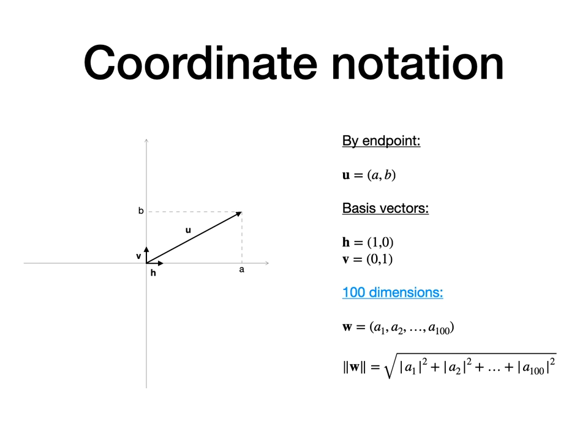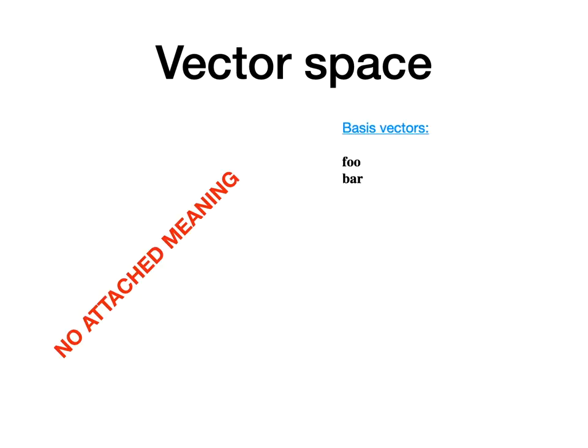But the story of vectors doesn't end here. Mathematicians also realized that vectors can be studied on an even more abstract level by defining so-called vector spaces. Here you can see an example of a two-dimensional vector space. The basis vectors are called foo and bar, indicating that for mathematicians it's not important what they really mean. What's important is that there is a rule that every vector in the vector space can be written as a unique linear combination of foo and bar, like u1 and u2. And as before, different coefficients result in different vectors.